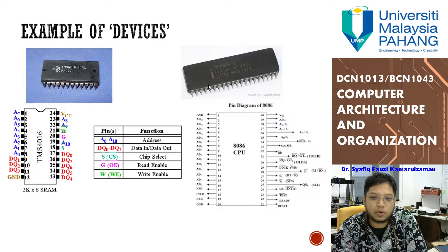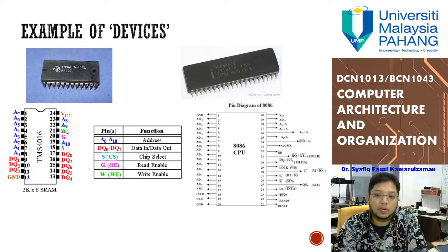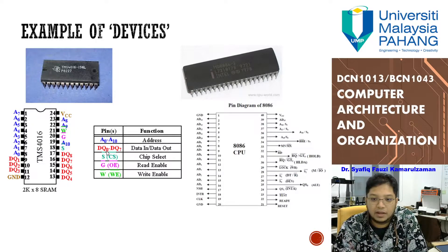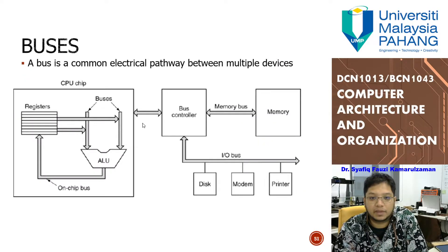If you look at a CPU — this is quite an old one, the Intel 8086 from 1978 — all those connections in the PC represent buses. In this case, 'A' represents addresses, 'D' represents data in or data out, 'S' represents chip select, 'G' represents read enabled, and 'W' represents write enabled. All of this is basically the highway inside your computer that interconnects all those components.